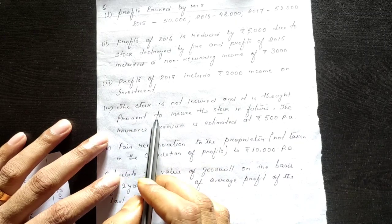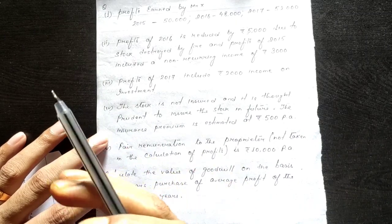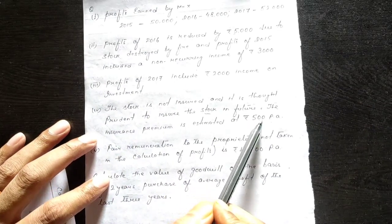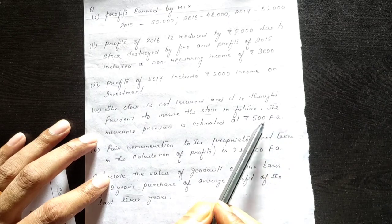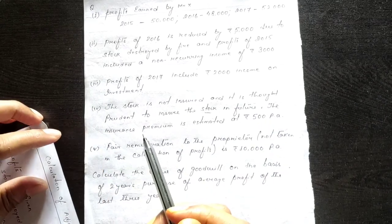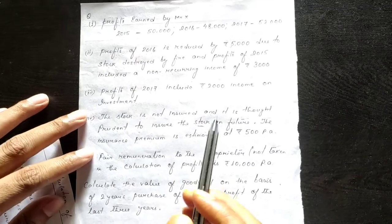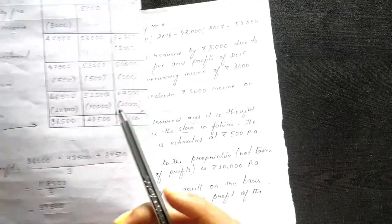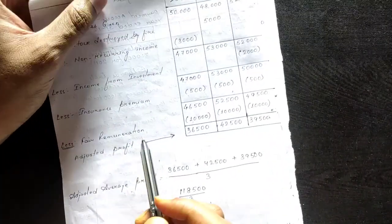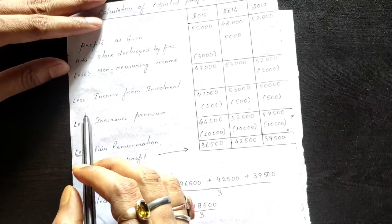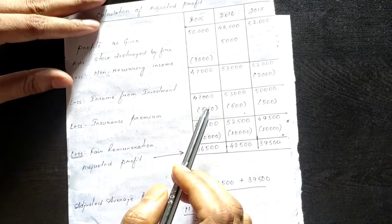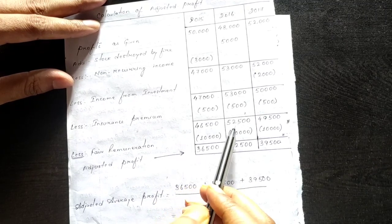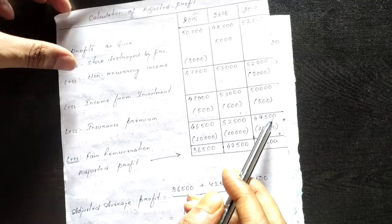Point four: the stock is to be insured, so insurance premium of 500 per annum must be paid. Since it is a normal business expenditure, it is deducted from each year. Less insurance premium: 500 from each column. After deduction, I got 46,500 for 2015, 52,500 for 2016, and 49,500 for 2017.